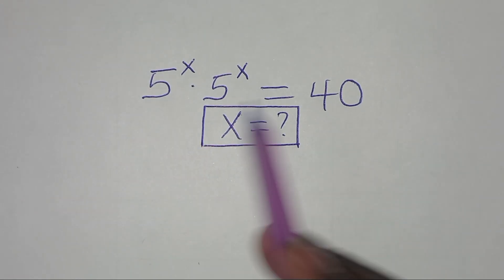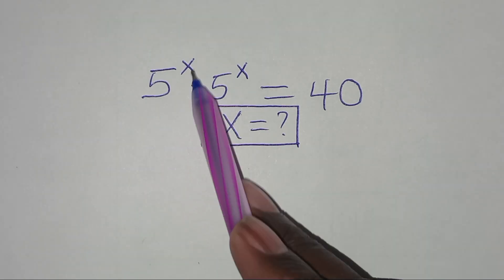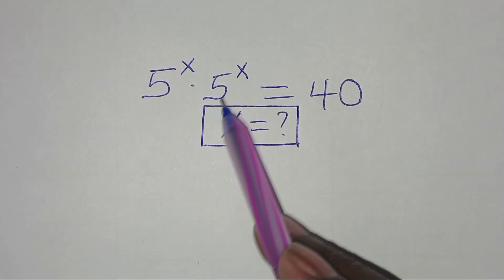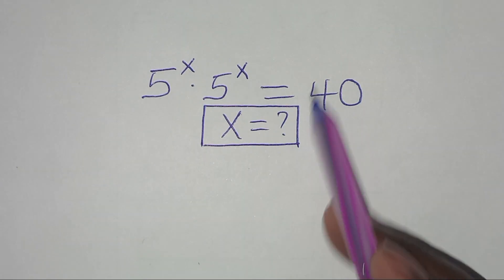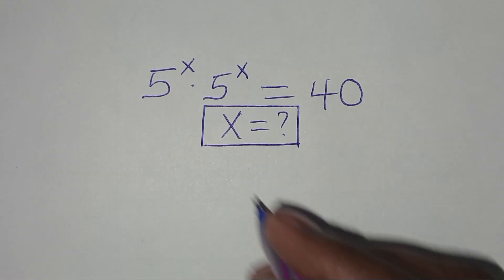You are welcome to solve this nice exponential equation which is 5 to the power x times 5 to the power x, and this is equal to 40. What is the value of x?